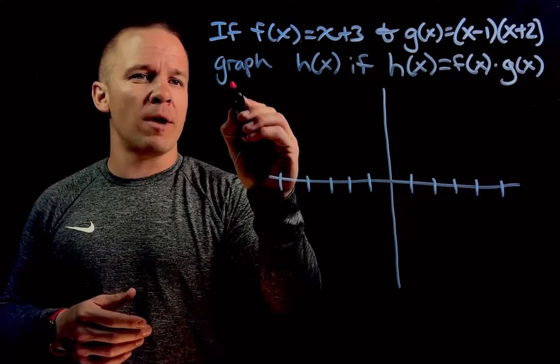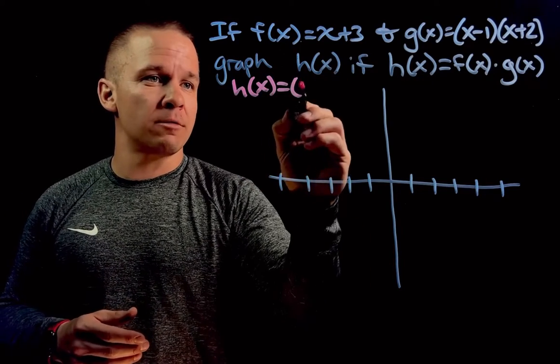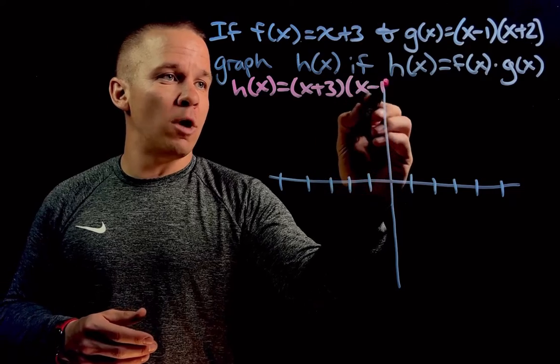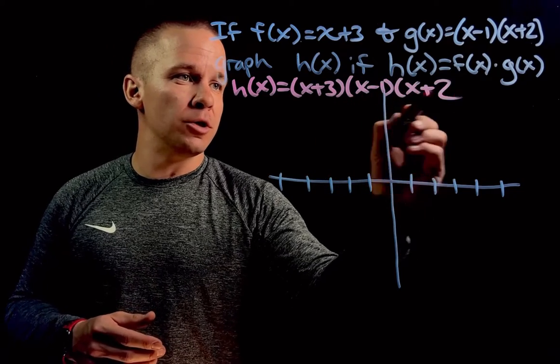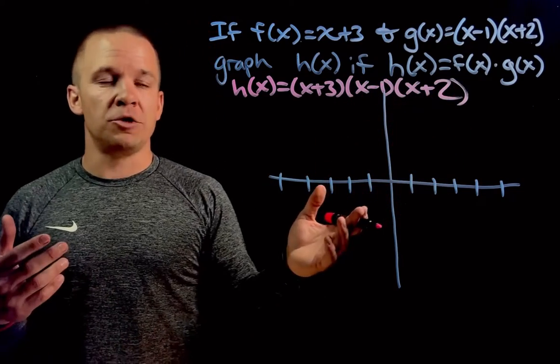Well first off, how about we write out h of x is then equal to x plus 3 times x minus 1 times x plus 2. Boom. Not too bad, right?